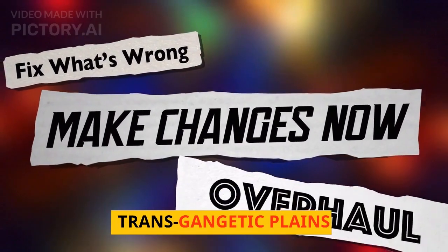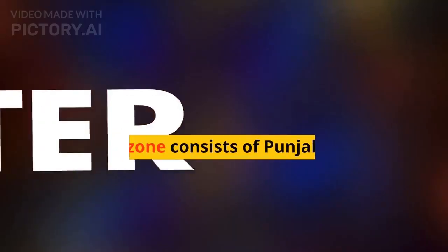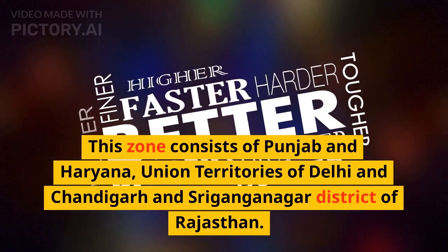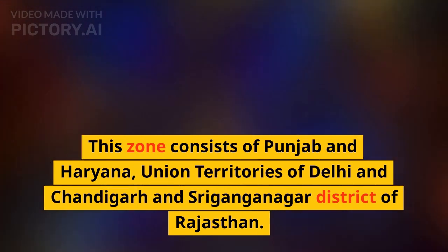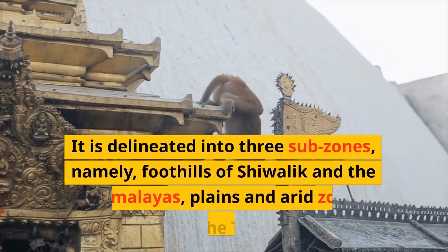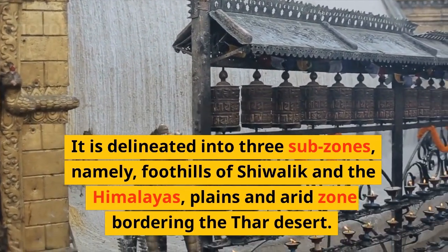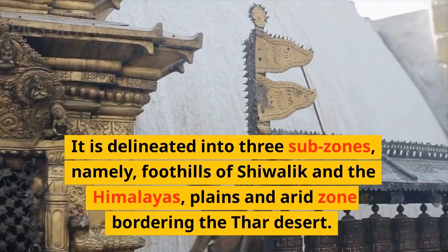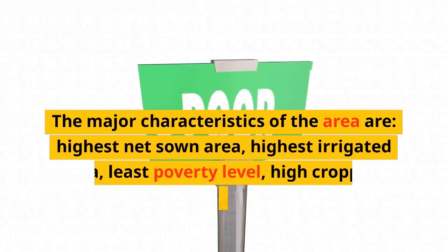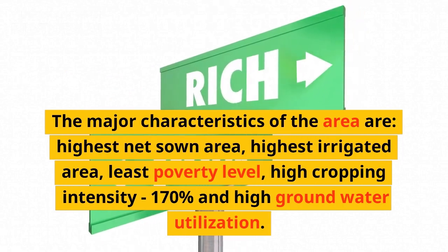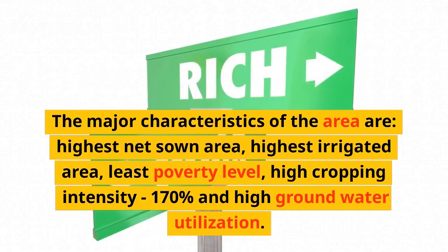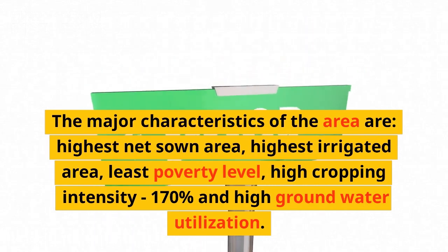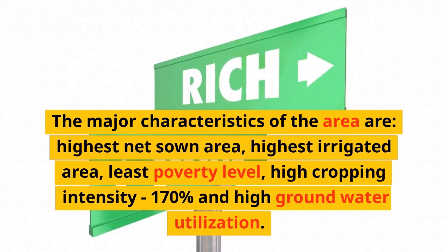Region 6: Trans-Gangetic Plains. This zone consists of Punjab and Haryana, union territories of Delhi and Chandigarh, and Sriganganagar district of Rajasthan. It is delineated into three sub-zones: foothills of Shivalik and the Himalayas, plains, and the arid zone bordering the Thar Desert. The major characteristics of the area are: highest net sown area, highest irrigated area, least poverty level, high cropping intensity of 170%, and high groundwater utilization.